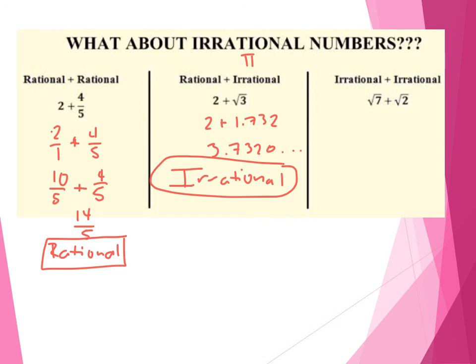And the last one — you get an irrational plus an irrational number, just radical 7 plus radical 2. How do I add these together? I'll put these into decimals. Radical 7 is 2.645..., add to it radical 2, which is 1.414... It's going to keep going on and on. When I add these together — a run-on decimal plus a run-on decimal — I'm going to get about 4.something. So when you add an irrational and an irrational number, you also get an irrational number.